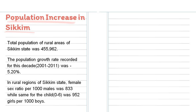Population increase in Sikkim: the total population of rural areas of Sikkim was 455,962. The population growth rate recorded for the decade from 2001 to 2011 was minus 5.20% in rural regions of Sikkim. The female sex ratio was 833 per 1,000 males, while for children around 6 years old it was 952 girls per 1,000 boys.